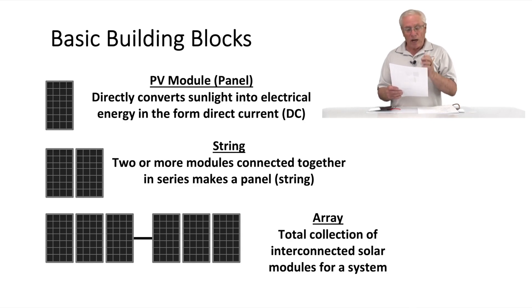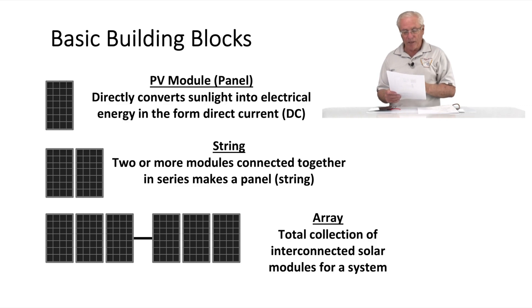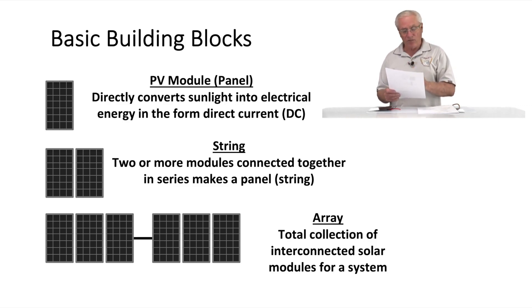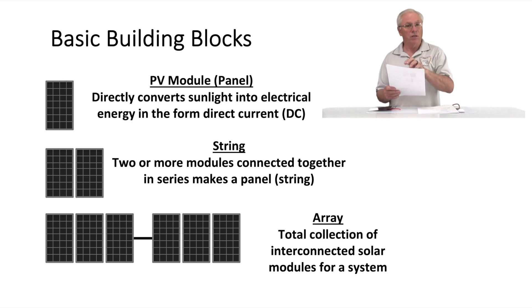The PV module directly converts sunlight into electrical energy in the form of direct current or DC, and that's important to note. If you connect two or more modules together in a series fashion, they call that a string in the PV industry. And then finally, the array is the total collection of all interconnected solar modules in a system.